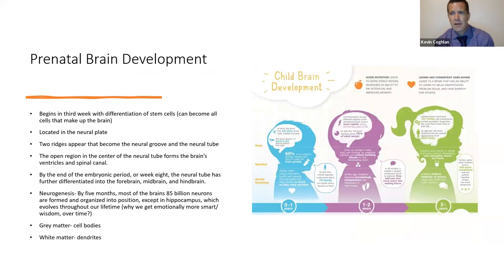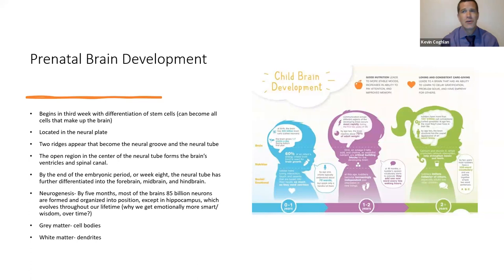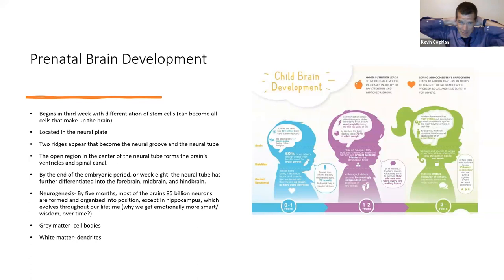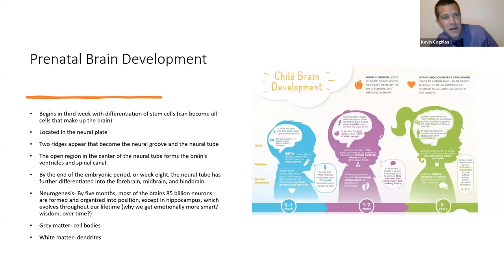Prenatal brain development begins in the third week with the differentiation of stem cells — cells that are capable of becoming any cell needed by the brain to form. It's located within the neural plate, and there are two ridges that appear and become the neural groove and the neural tube. The open region in the center of the neural tube forms the main ventricle and the spinal canal, which eventually becomes your spinal cord — essentially a whole bunch of nerves going from your brain all the way down to your toes and hands.